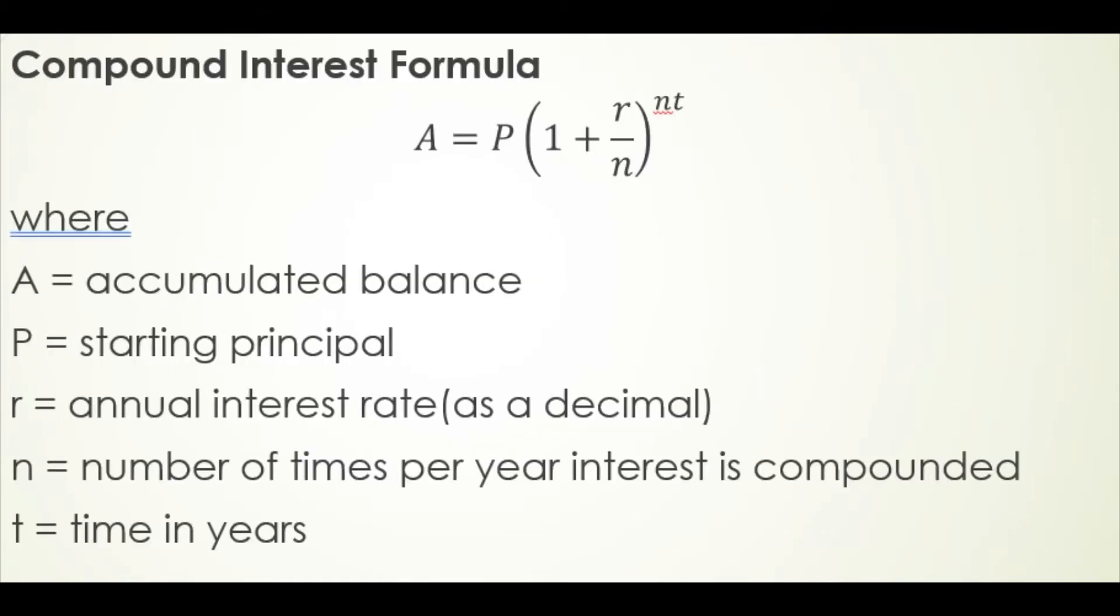So, the formula that we're going to use to calculate compound interest is this one. A equals P times the quantity 1 plus R over N taken to the N times T power. Where A is the accumulated balance. That is, it's the amount at the end of this investment period. P is the starting principal, the amount that we originally invested.